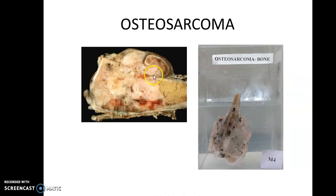You can also be asked a specimen of bone. Bone tumours are very commonly kept. Whenever you have a bone tumour, describe it in terms of its location. The important bone tumours from the exam point of view are osteosarcoma, Ewing's sarcoma, chondrosarcoma, and osteoclastoma. Osteosarcoma arises from the metaphysis, giant cell tumour from the epiphysis, chondrosarcoma from the diaphysis, and Ewing's sarcoma from the diaphysis.